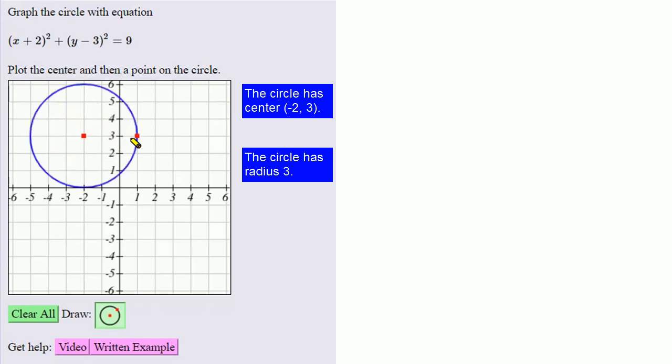And once we're satisfied that this is the circle with center negative 2, 3, with radius 3, we can click on the graph to mark the point, and then submit our answer.